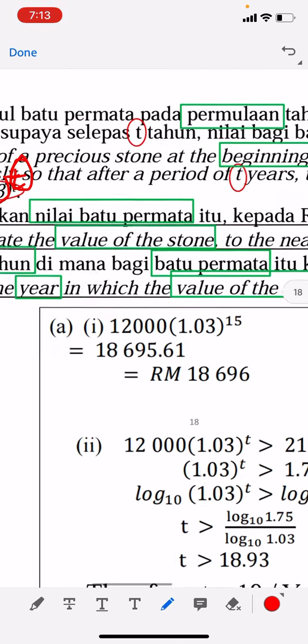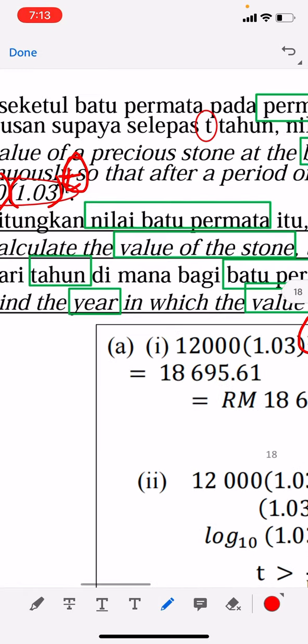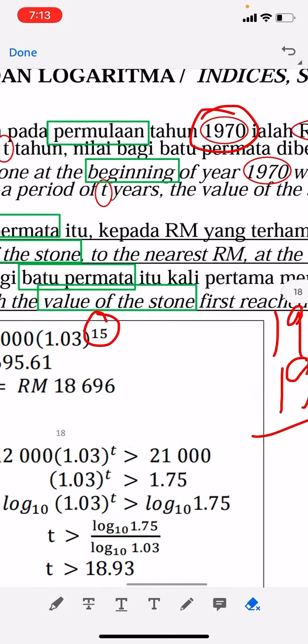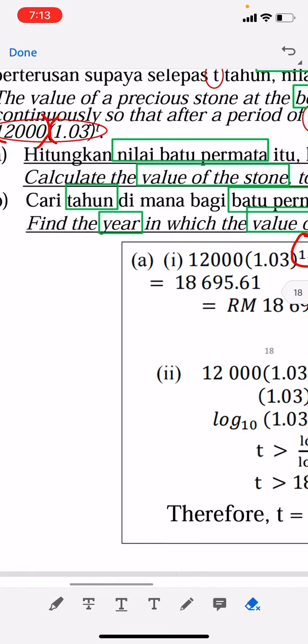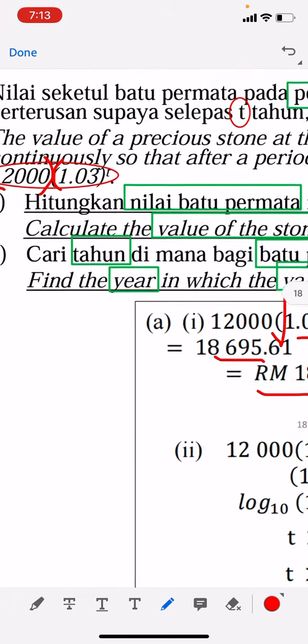So the t now is actually 15 because of the year mentioned, unless they say 1970, but they say 1985. Be very careful when you read the question. Press the calculator - make sure you press the index number first, then times 12,000, so you get 18,696 ringgit Malaysia.